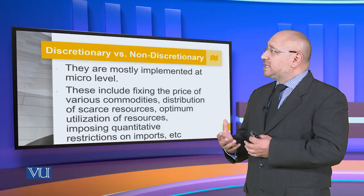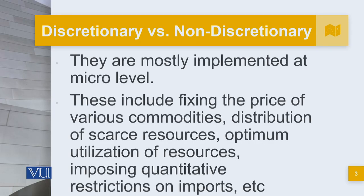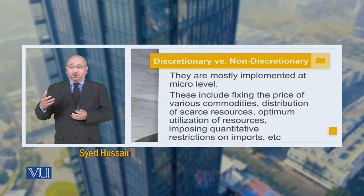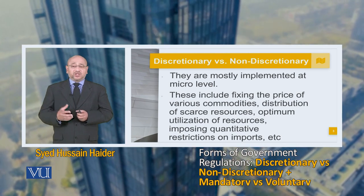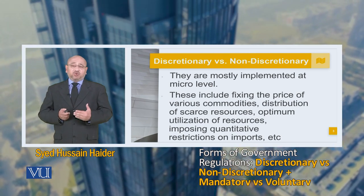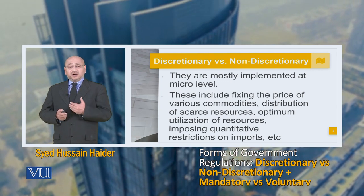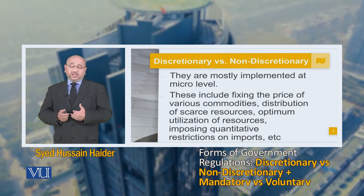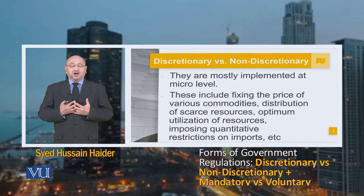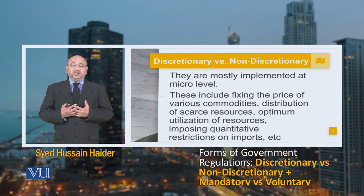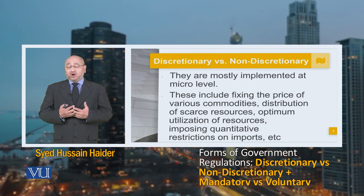Other examples include optimum utilization of resources — such as minerals, trees, and plantation — and imposing quantitative restrictions on imports, for example wheat imports, oil imports, or automobile imports. All of these are done quantitatively and are discretionary regulations held by the relevant department. They are not complete laws but rather policies or statutory regulatory orders, which we call SROs.